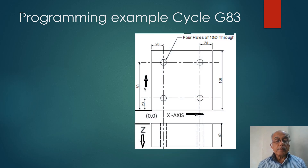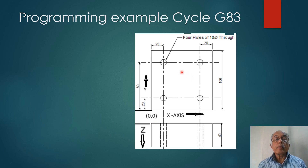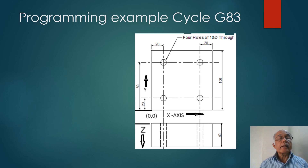This is the component drawing. This is a plate of 100 mm by 100 mm. This is the datum zero point for the X and Y axis. This is the X axis and this is the Y axis. This is the zero point for the Z axis. The main operation is drilling of four holes of 14 mm diameter through. The total thickness of the plate is 40 mm. Since the drilling depth is more, we can use cycle G83.